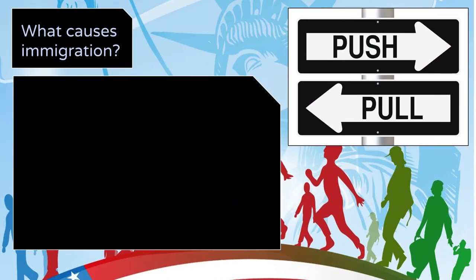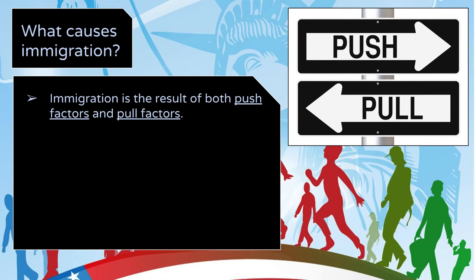The first thing we're going to look at is what causes immigration. We've already learned our immigration vocabulary, so some of this will be review. People don't just immigrate because they wake up one day and feel like it — there are reasons why people immigrate. Immigration is the result of what we call push and pull factors. Some things push people out of their country, and some things pull people towards a new country.